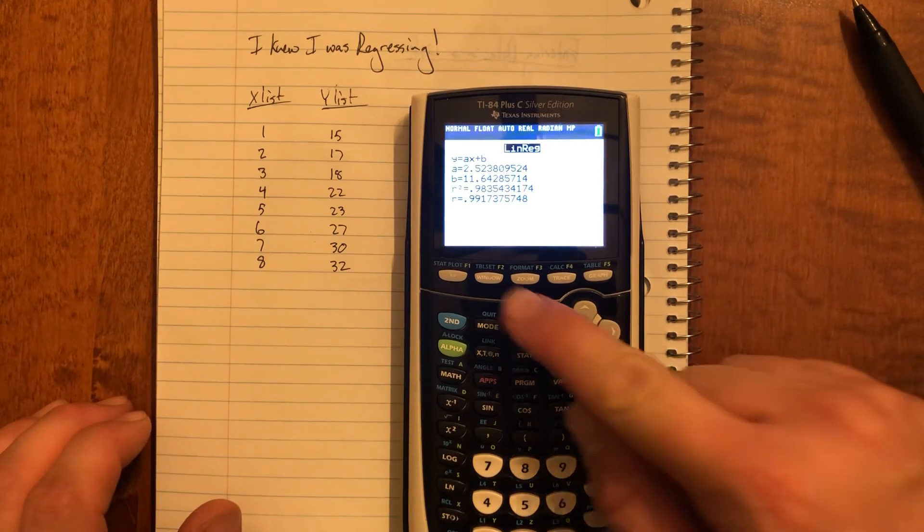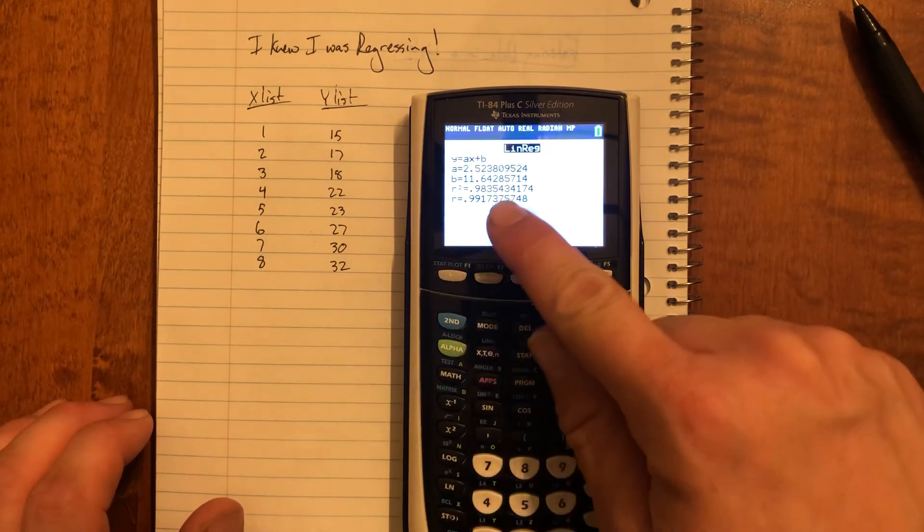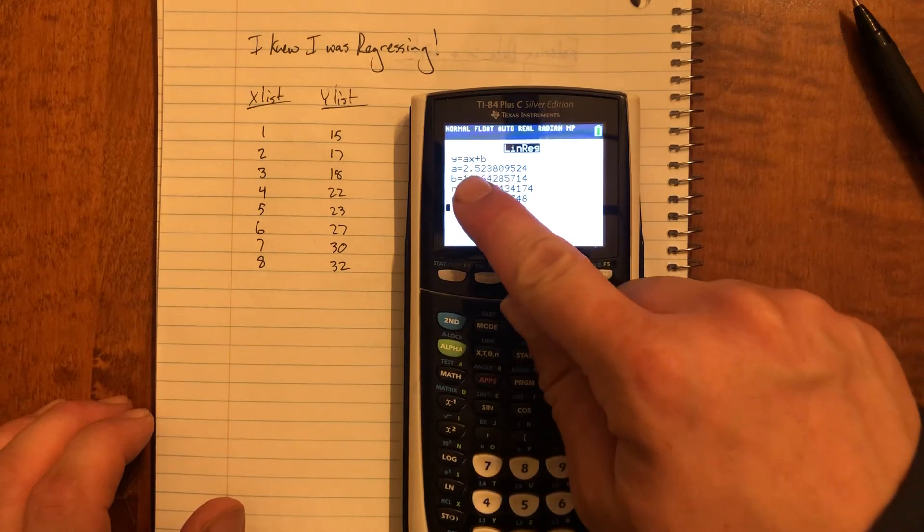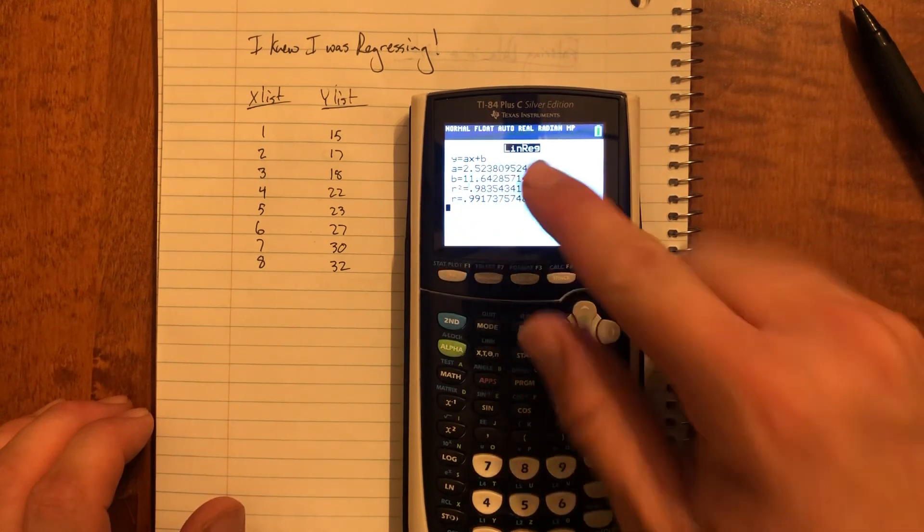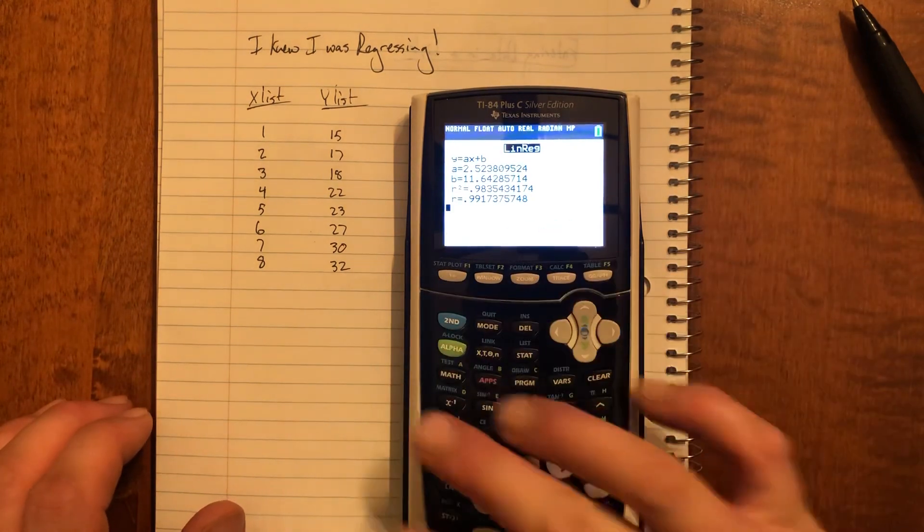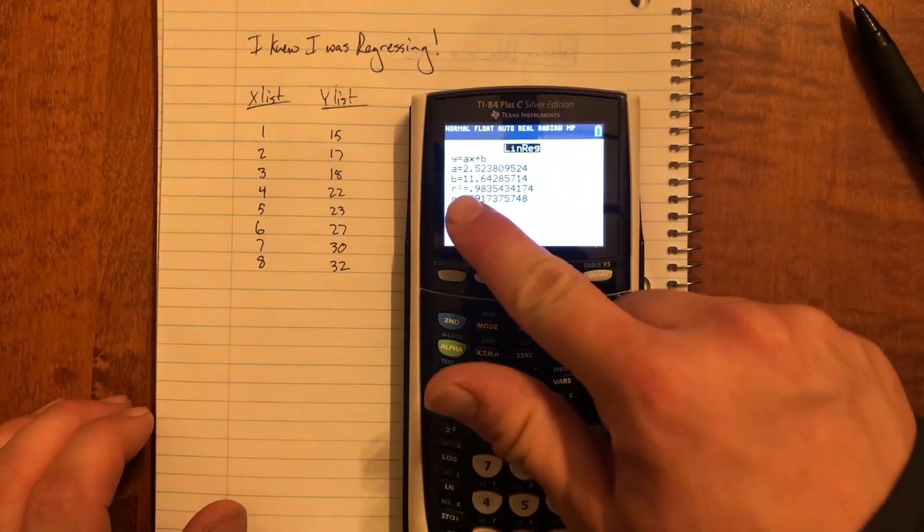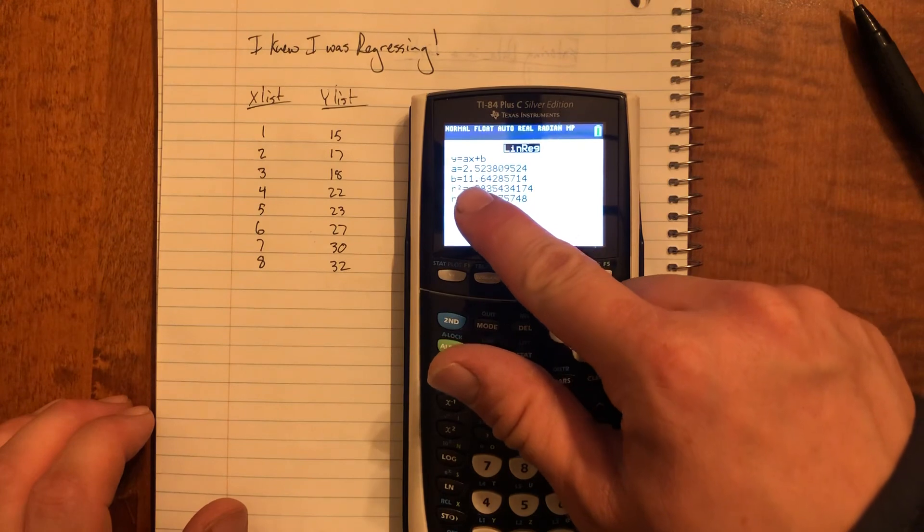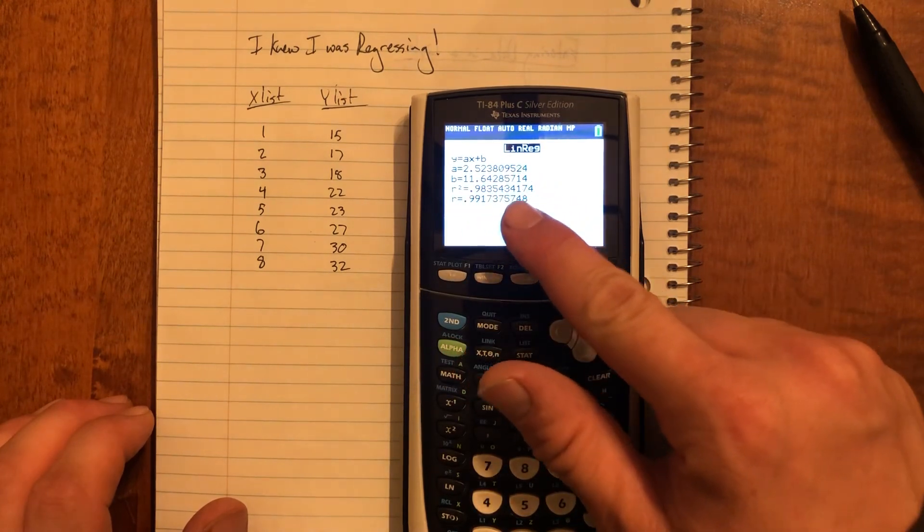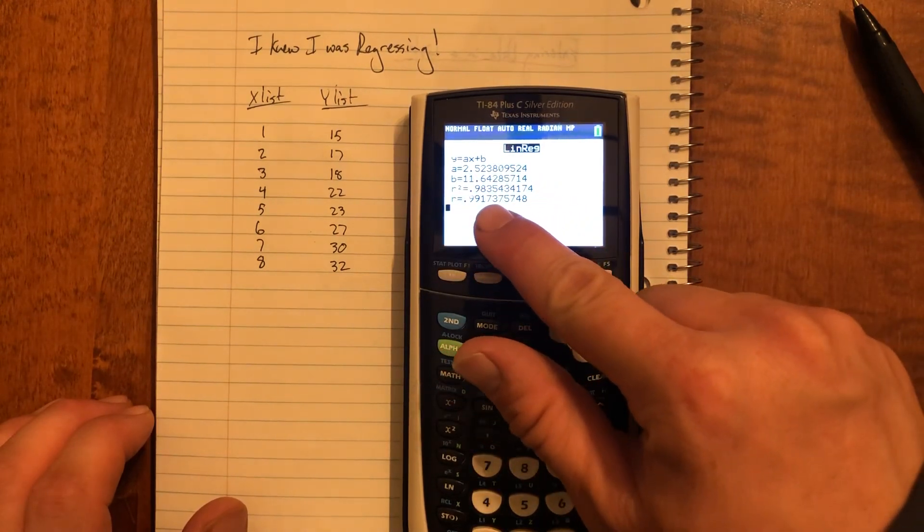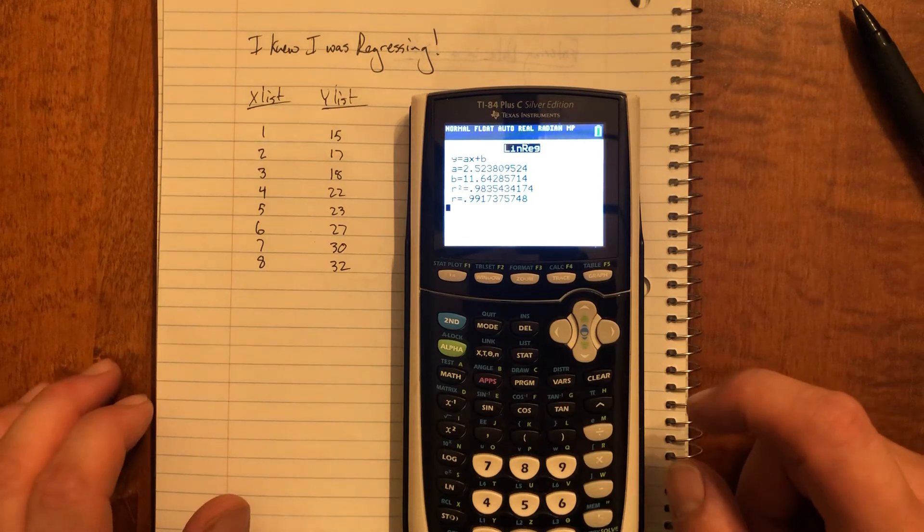By the way, on tests so often people forget to just write down these numbers before pressing anything else. If you press any other button, all this stuff vanishes. So you're going to want to write down a and b at least to three decimal places, and you're also going to want to write down your r value at least to four decimal places.